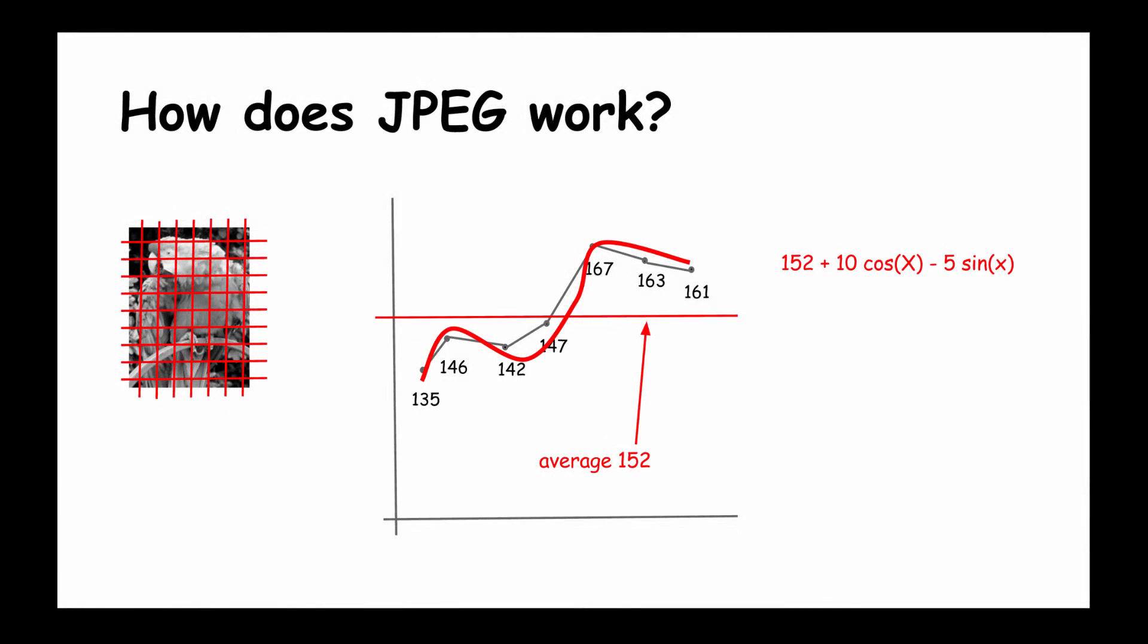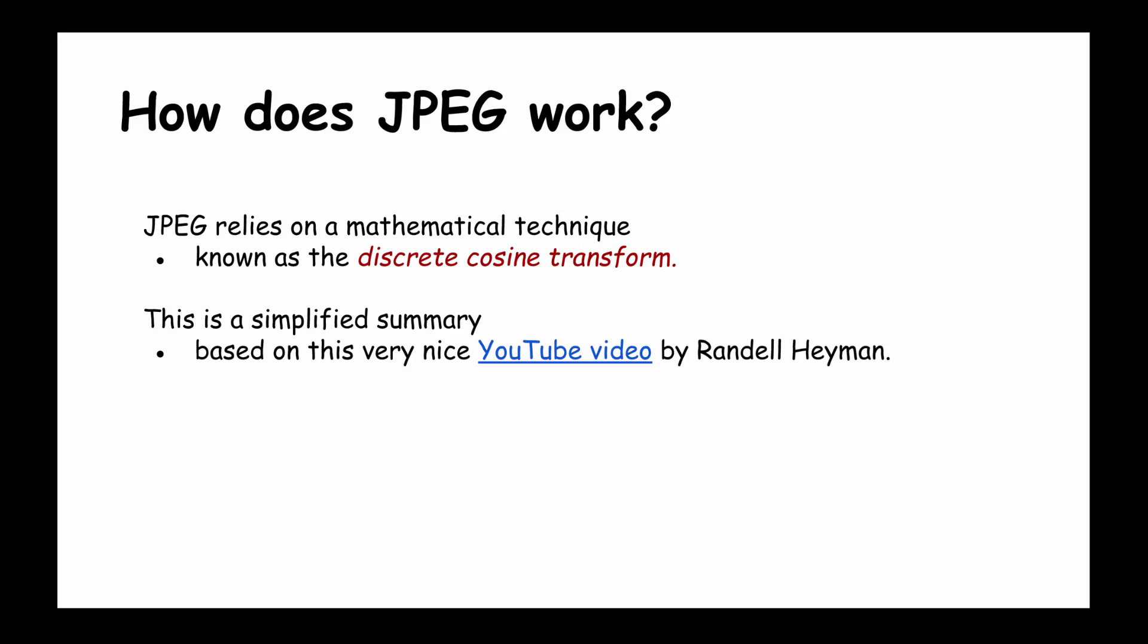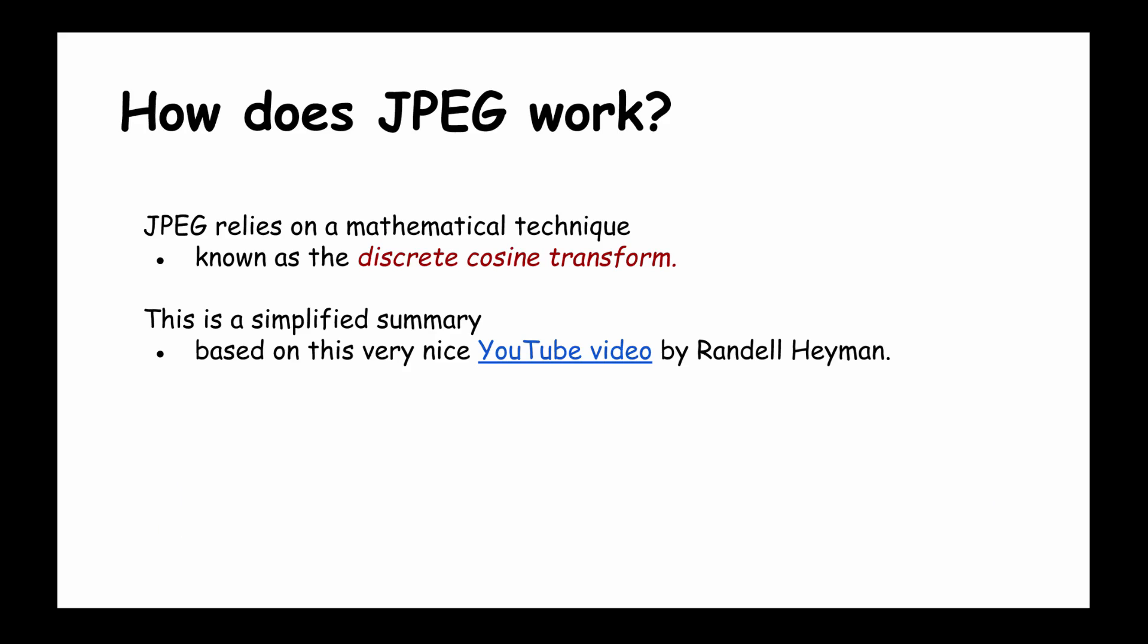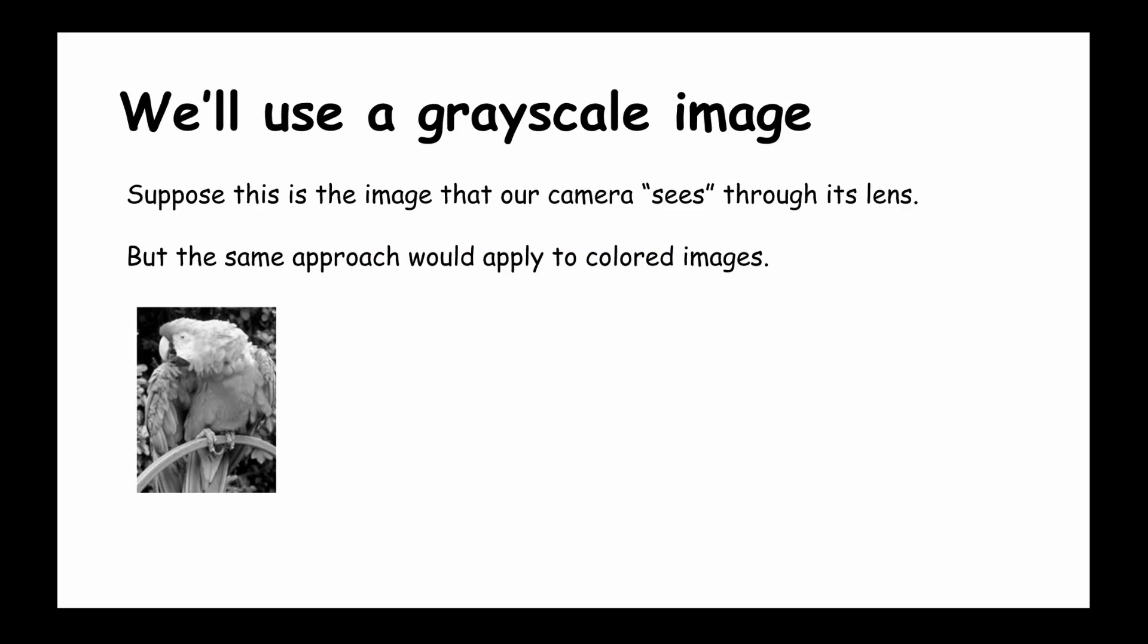Let's look at how JPEG works. JPEG relies on a mathematical technique known as the discrete cosine transform. This is pretty sophisticated mathematics, so we're not going to go into the math details. Our summary is a very simplified one based on this nice YouTube video by Randall Heyman. I really encourage you to look at this if you want a better explanation of how this works.